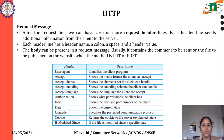Accept-Language — it shows the language the client can accept. Authorization — it shows what permission the client has. Host — it shows the host and port number of the client.